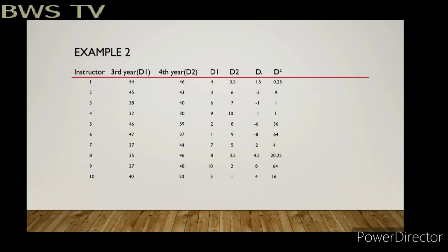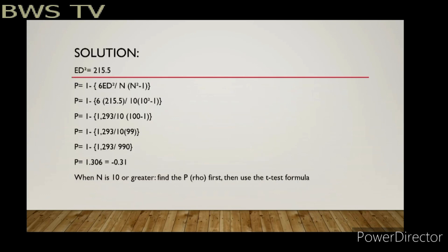We subtract to find D: 4 minus 3.5 is 1.5, 3 minus 6 is negative 3, and so on. Then we square each D value: 1.5 squared is 0.25, negative 3 squared is 9, negative 1 squared is 1. The summation of D squared — which is all we need for Spearman's Rho — equals 215.5.